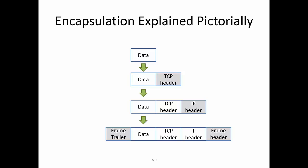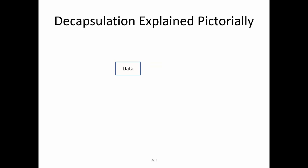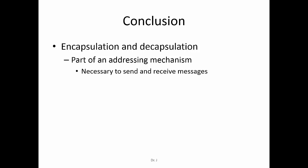Here is a big picture view of how everything works. You start with the data, the TCP header is added, then the data and TCP header receive the IP header, and finally the whole thing is encapsulated by the frame header and frame trailer. At that point the message is ready to be sent. On the receiving side, decapsulation occurs: you first remove the frame header and trailer, then the IP header, then the TCP header, and finally you have the data, which is sent to the application that needs it. The gist is that encapsulation and decapsulation are part of an addressing mechanism essential to sending and receiving messages in a network.